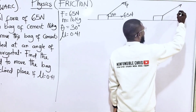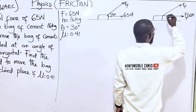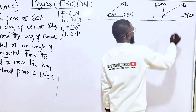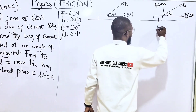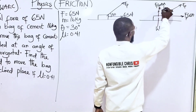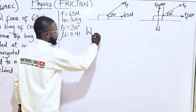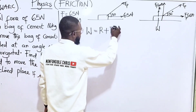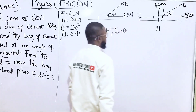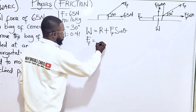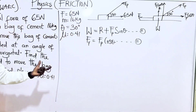Let's draw the free body diagram. A force F_p pulls the object at an angle of 30 degrees, forming a horizontal component F_p cos theta and a vertical component F_p sin theta. The weight equals the normal reaction N, so the weight equals N plus F_p sin theta. That gives us equation one. The frictional force equals F_p cos theta — that's equation two.